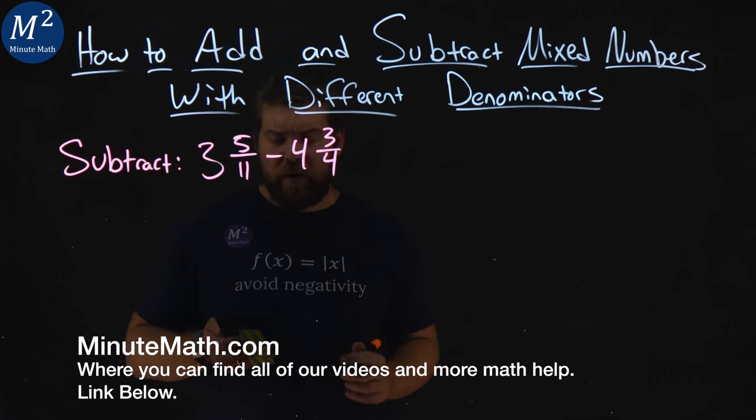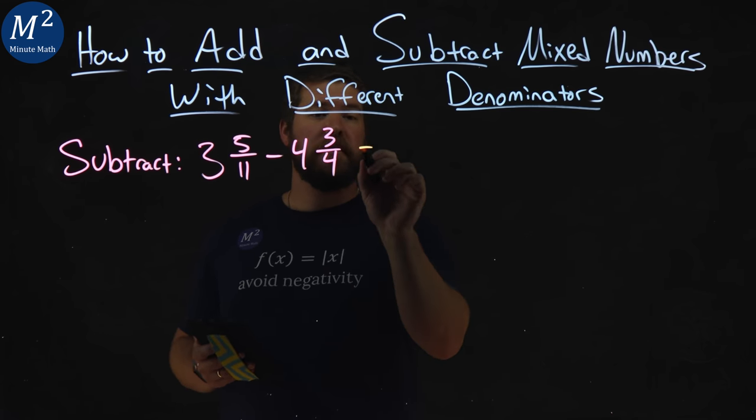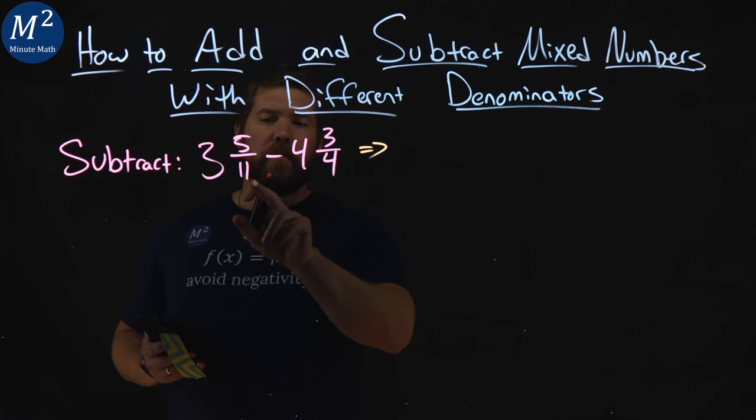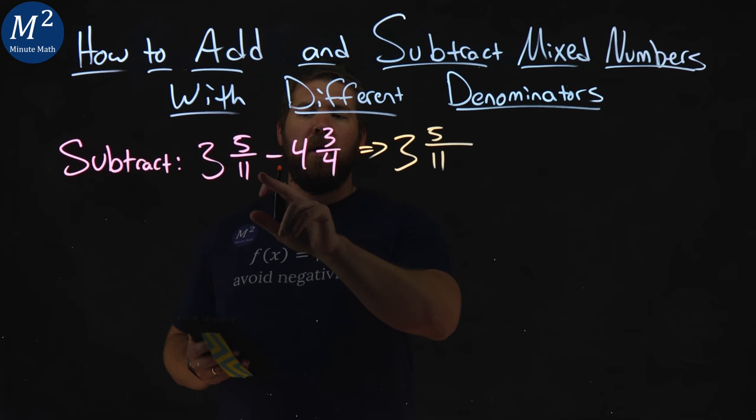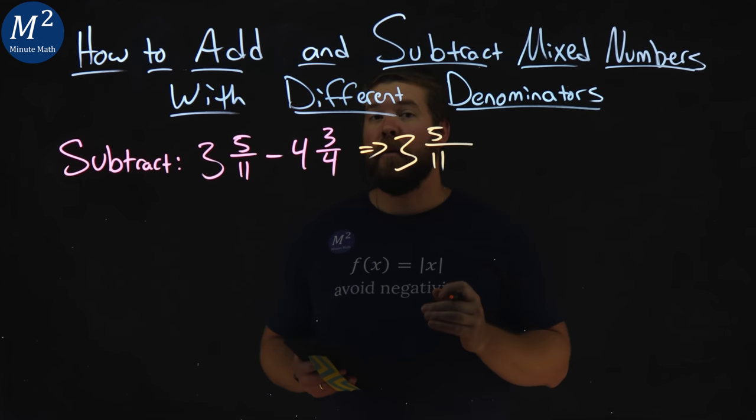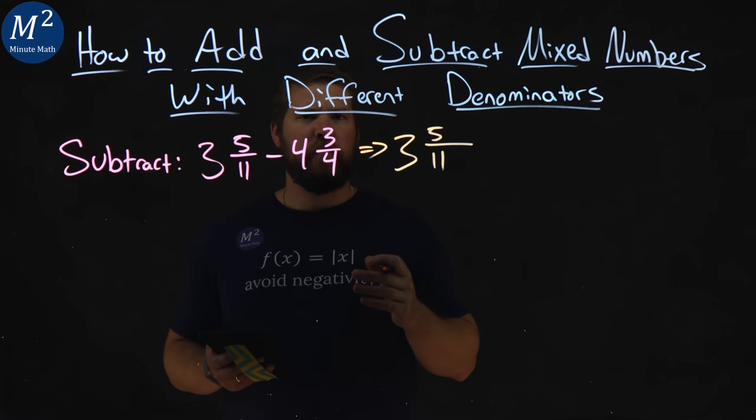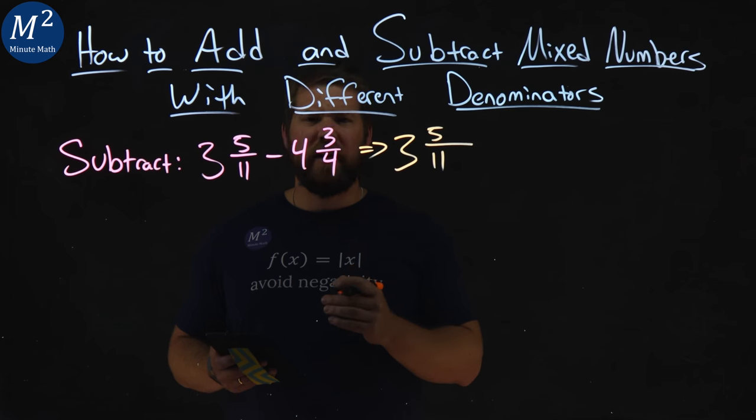Well, the first thing I want to do is find a common denominator with our fractions here. So, 3 and 5 elevenths, well, 11 and 4, a common denominator for them would be 44, 4 times 11. That's the first one I can really find.